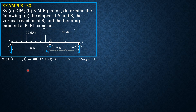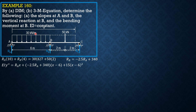We then set up our moment equation — the equation of the elastic curve. EI y double prime equals RA times X, plus (negative 2.5 RA + 340) times (X minus 6), plus 15 times (X minus 6) squared, minus 15 X squared, minus 50 times (X minus 8). That's the equation of the elastic curve, which represents the moment at any section of the beam.